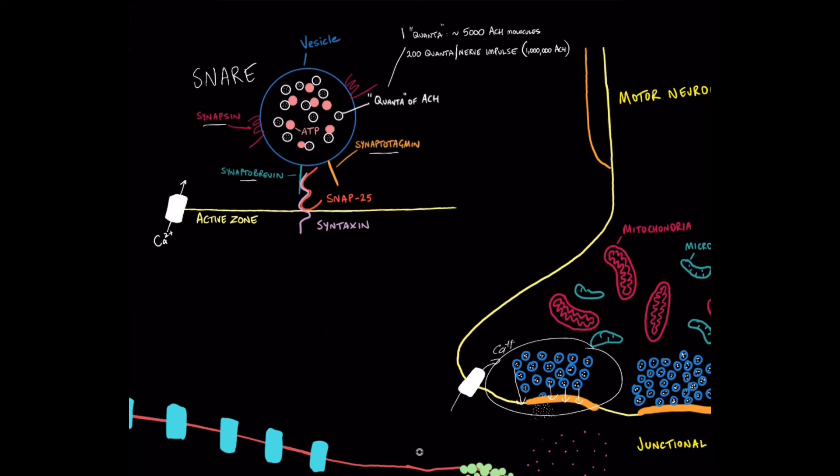Synaptotagmin here is the vesicle's calcium detector. So when calcium enters into the nerve terminal it's going to interact with the synaptotagmin and set in place a chain of events which results in the fusing of these membranes and the exocytosis of the ACH quanta.